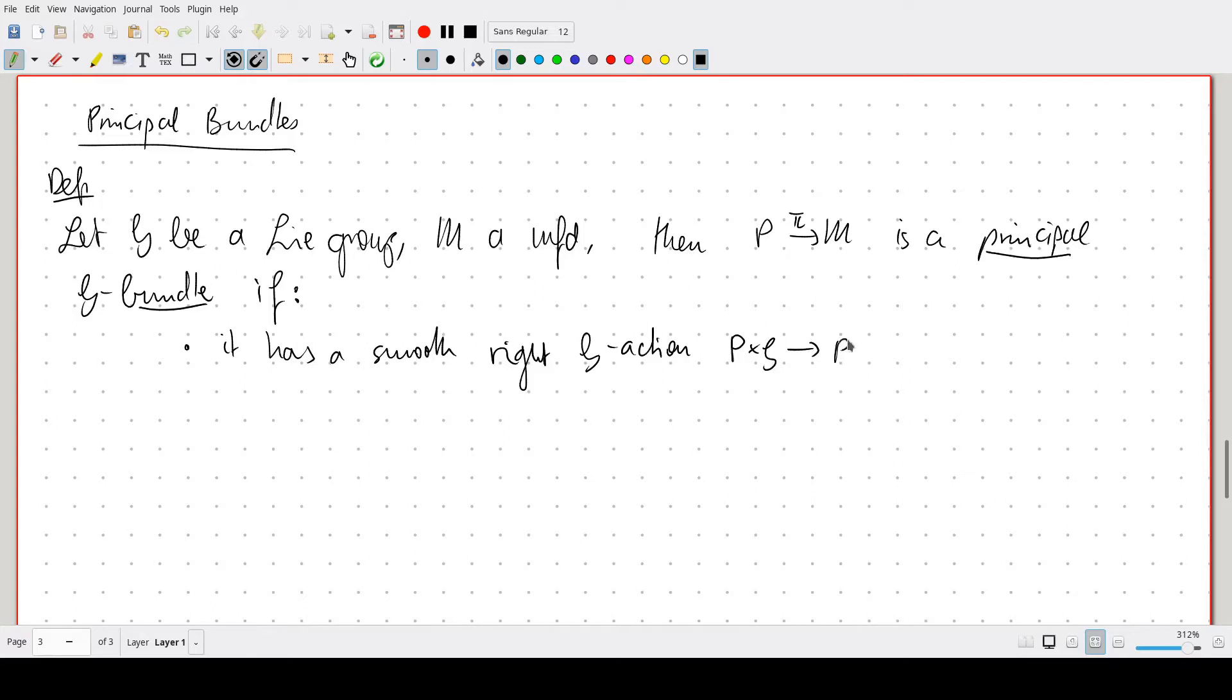our map Pi respects that smooth G action. So for all P in P, for all G in G, we have Pi of PG is equal to Pi of P.